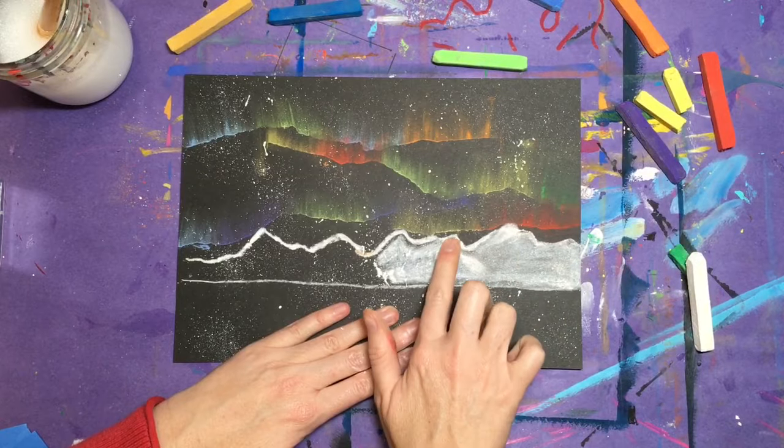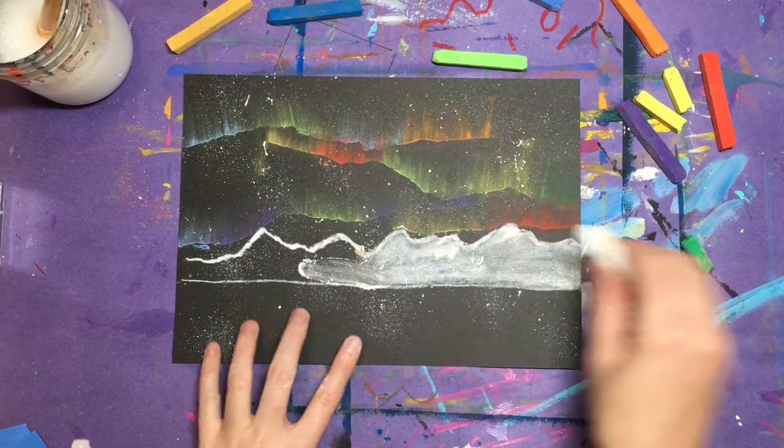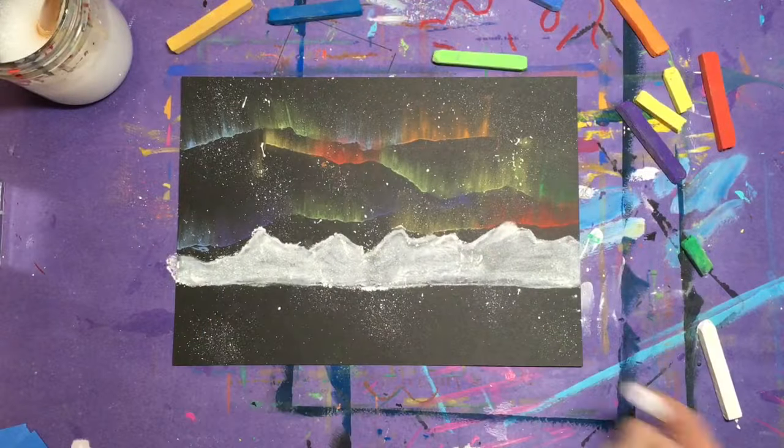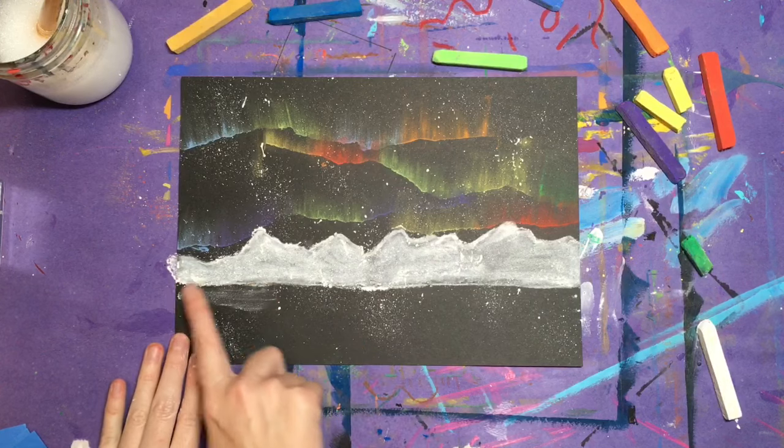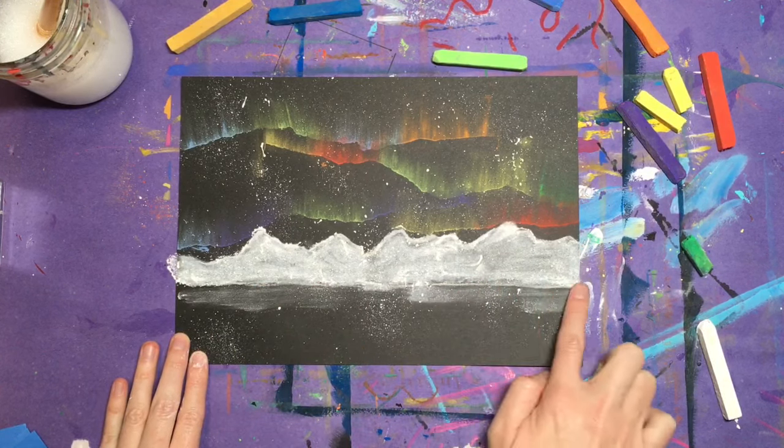This time though, instead of tapping away any extra chalk dust, blend it into the paper, and then you can use all of the chalk without wasting any of it. Instead of wiping your finger off on your messy mat, wipe it down below the mountains to create a nice reflection down in the ocean water.